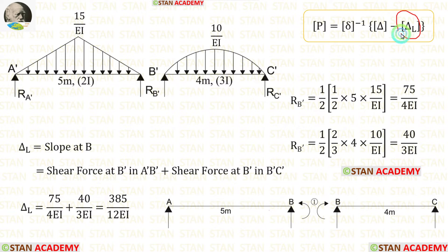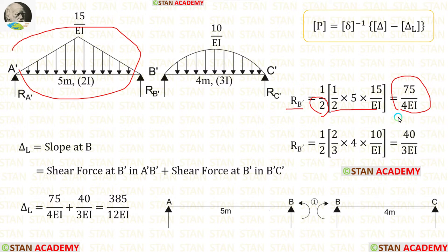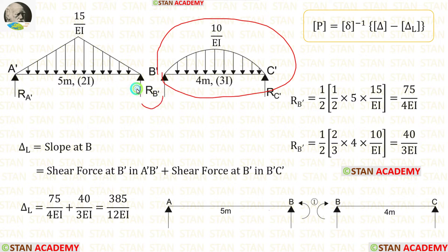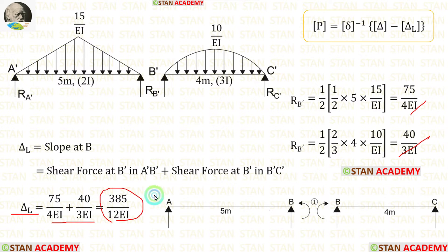To find delta L, we need to find the reaction at point B'. For the span AB diagram, it is symmetrical, so RB' equals the area divided by 2, giving 75/(4EI). For the span BC diagram, it is also symmetrical, so RB' equals the area divided by 2, giving 40/(3EI). Adding these two values gives delta L equal to 385/(12EI).